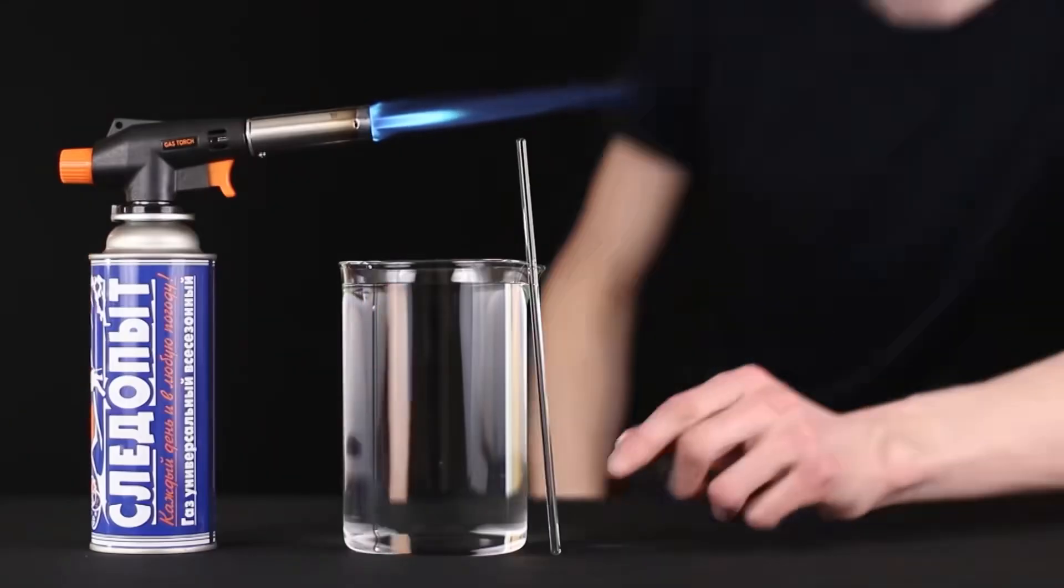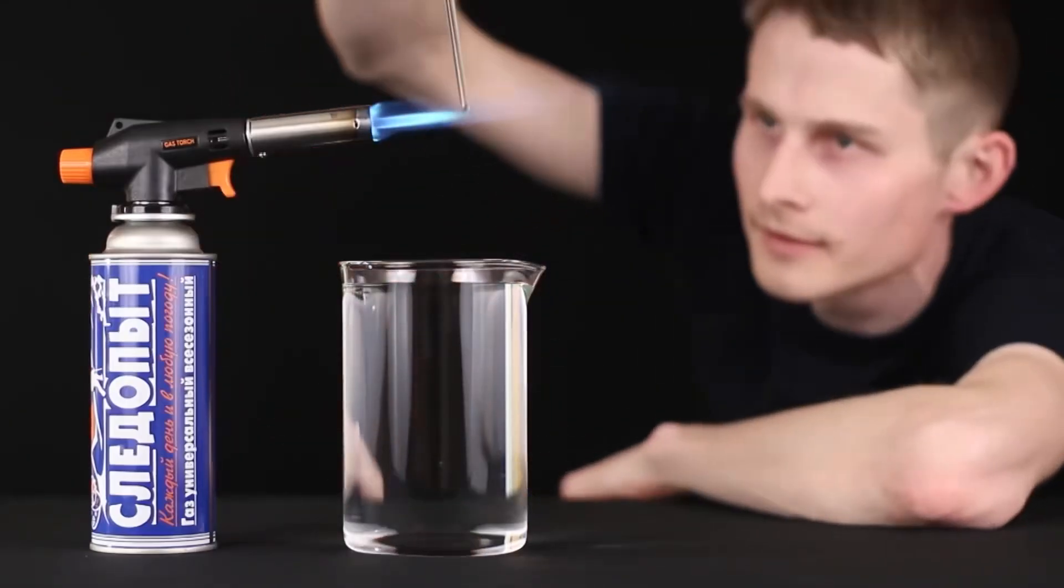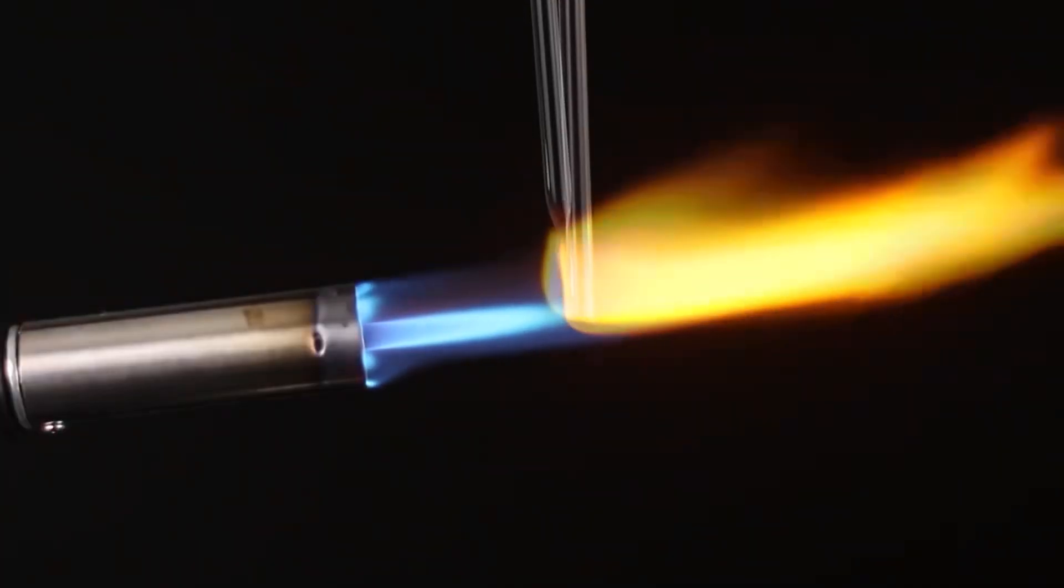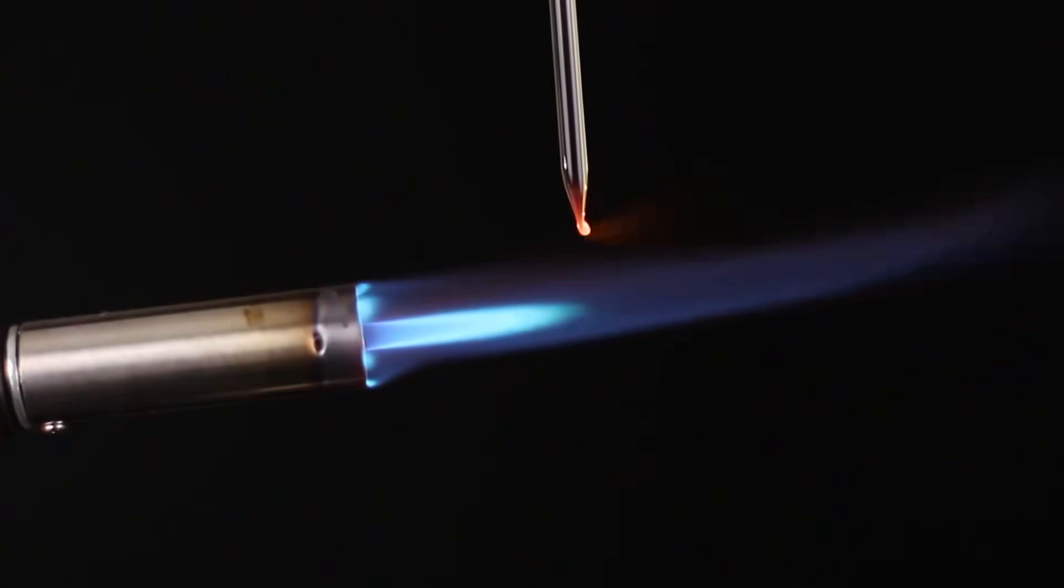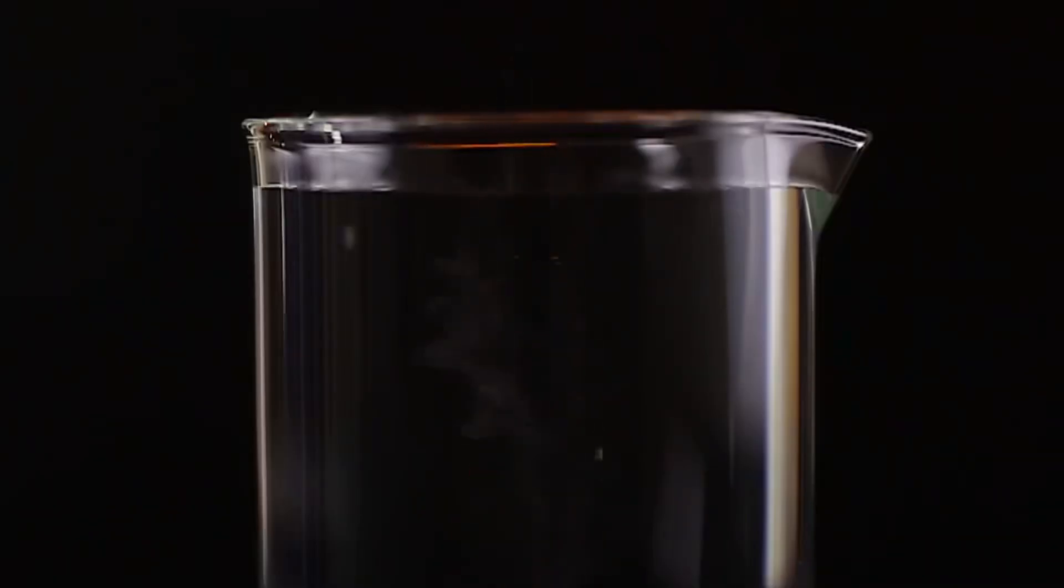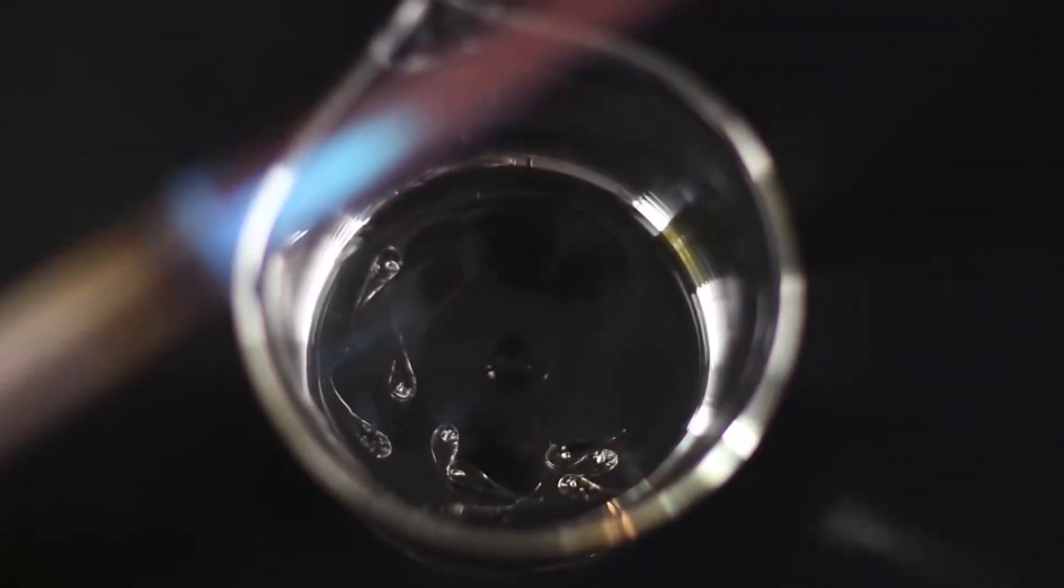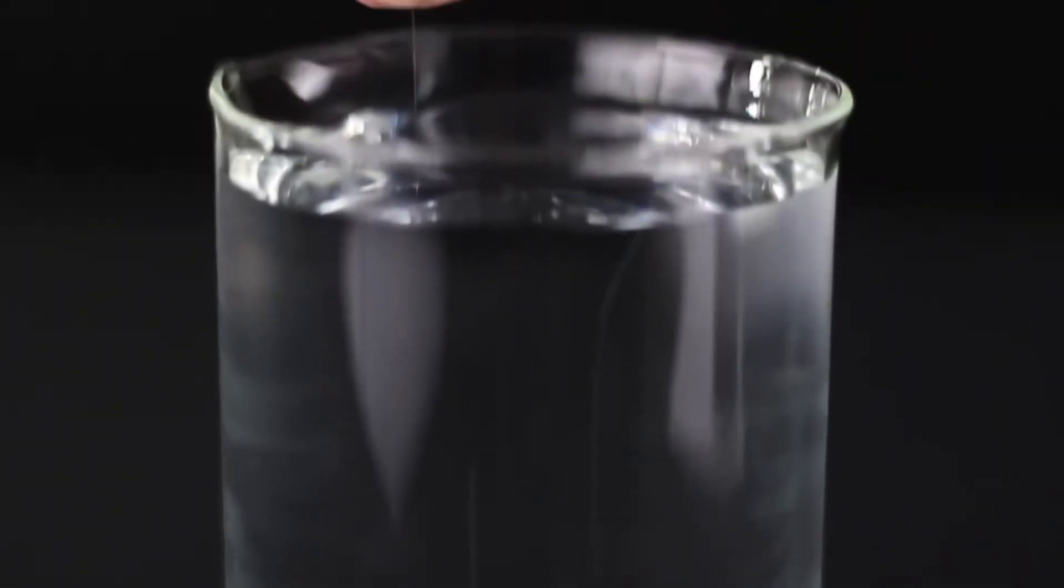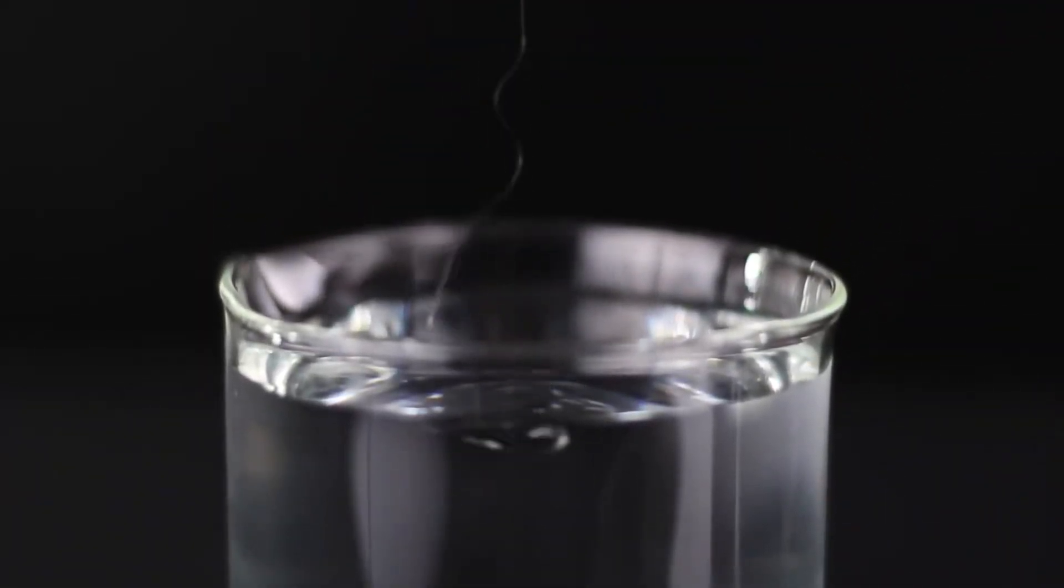We will install a gas burner over a container of cold water. We will bring the glass tube to the fire and wait until the glass drop falls into the water where it will instantly freeze. In addition to the drop itself, a thin glass thread freezes through which we will get them. Just look at how beautiful it is. But besides that, it's also very strong. You can't even break it with a hammer.